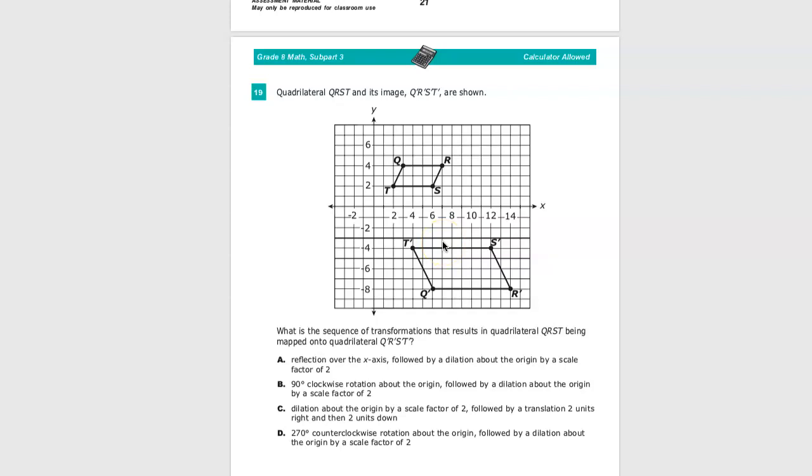What is the sequence of transformations that results in the quadrilateral QRST being mapped onto quadrilateral Q prime, R prime, S prime, T prime? Now, the issue here is really taking a look at finding one point and transforming it, because it's not all translations. Find one that has like a weird register.